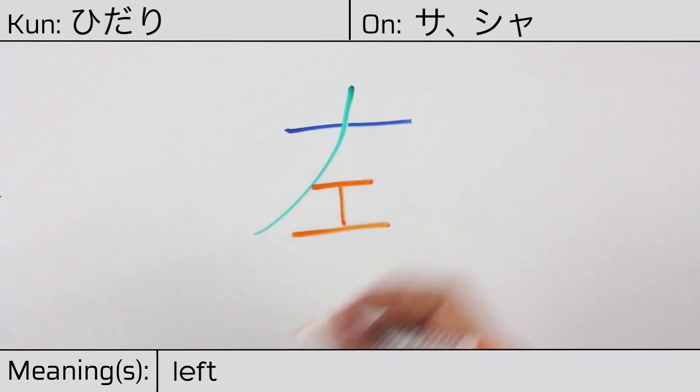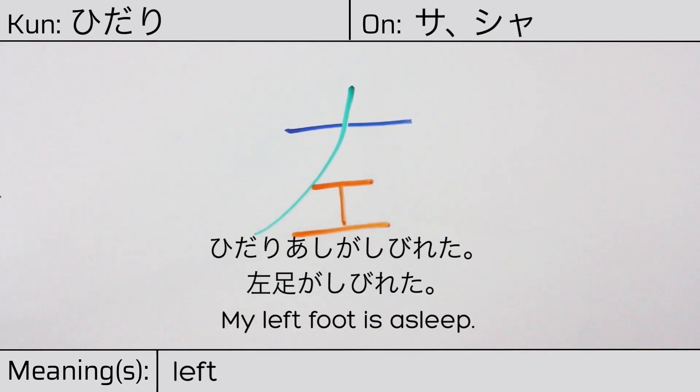Our example sentence is Hidari ashi ga shibireta. My left foot is asleep.